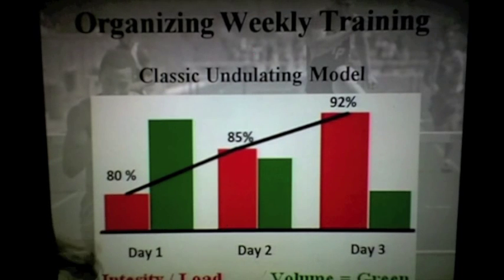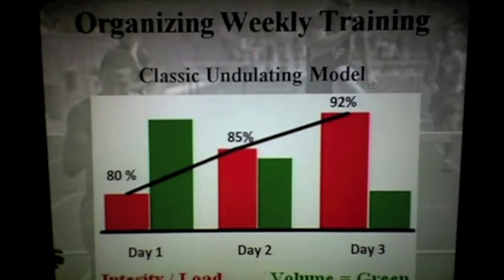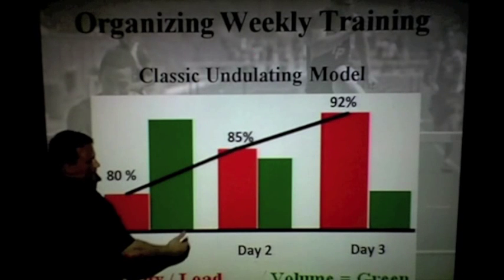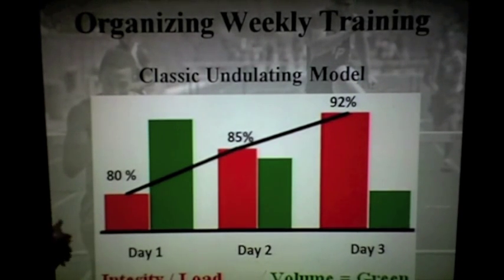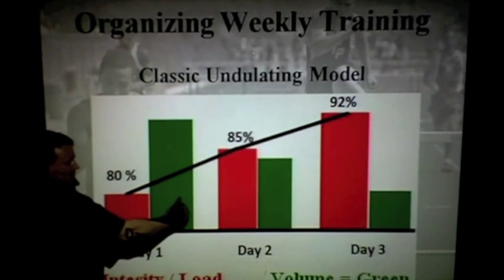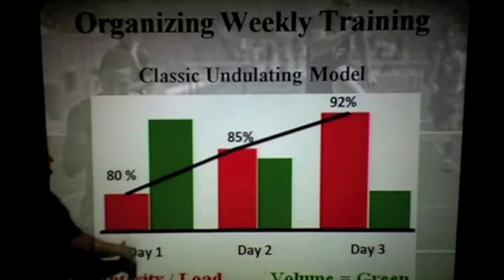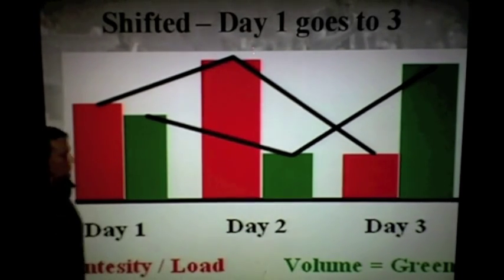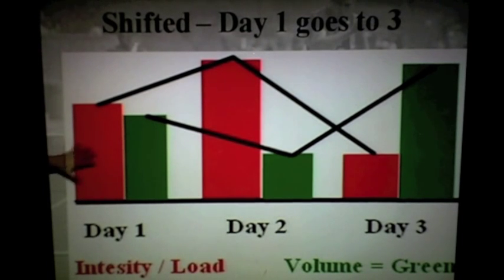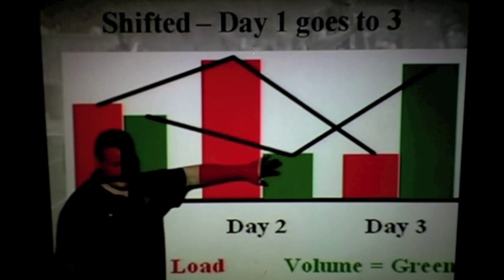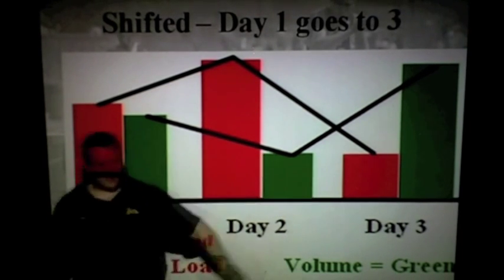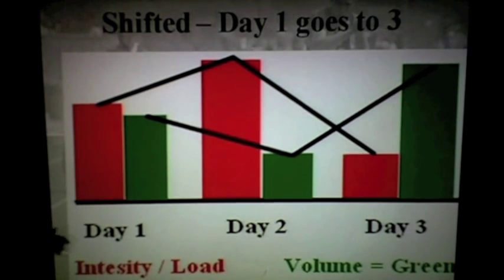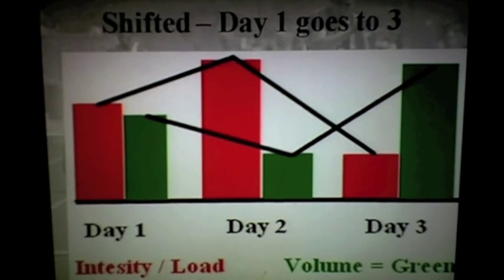The problem with the classic model is that the highest volume day beats up drug-free athletes and in-season track athletes — they couldn't recover to come back for the next session. So what I did was take day one and shift it to Friday on a three-day model, sliding everything back. Day one becomes a medium-heavy day, day two is the heaviest day — max effort — and day three is the high-volume day, giving athletes the weekend to recover.